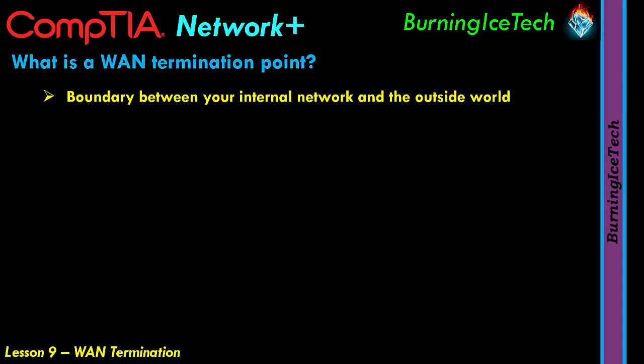Now in most countries, if you have something like fiber, the provider would normally bring the fiber line up to more or less the outside of your house or office. They won't always bring it into your house or office — they will terminate the line outside in a little box, which we refer to as a termination box. That little box is called the termination point.